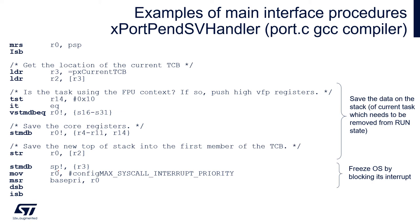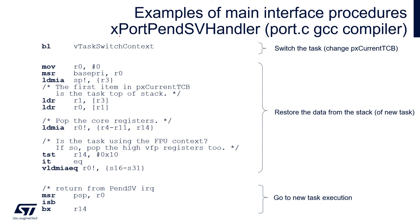Note that the application is still in old task execution mode. Now it is time to switch the context. The first step is to freeze the operating system for a while. To do this, the scheduler blocks all interrupts from the configMAX_SYSCALL_INTERRUPT_PRIORITY value onwards - so all interrupts that may execute operating system functions, plus the SysTick interrupt and the PendSV interrupt, are blocked. It does not block all other MCU interrupts. The BASEPRI register is used for this. After barrier instructions, it is time to switch the context by calling vTaskSwitchContext, located in task.c file.